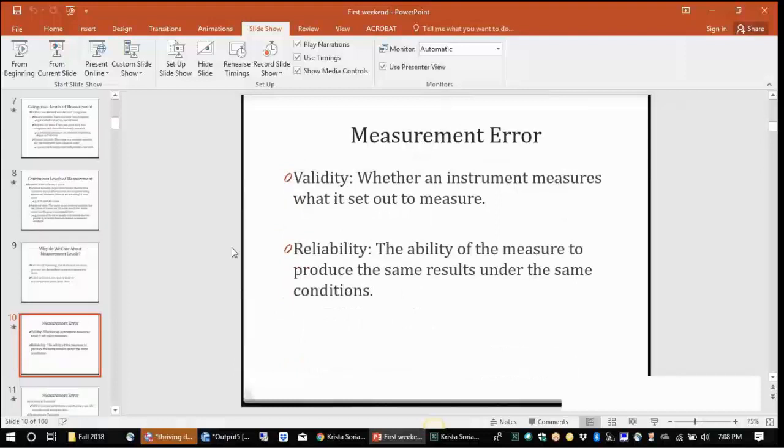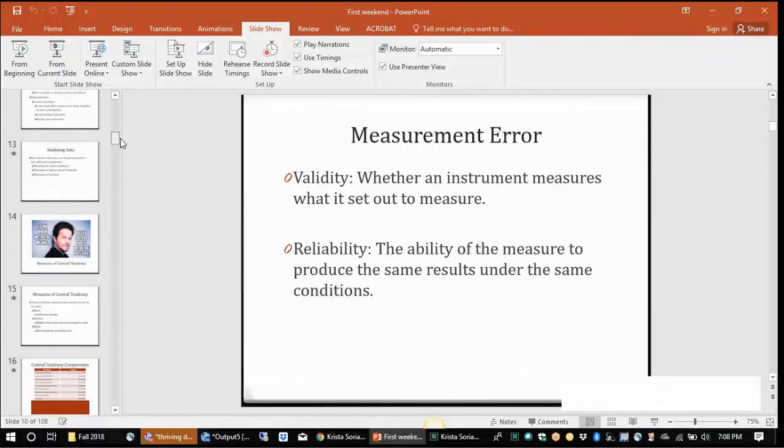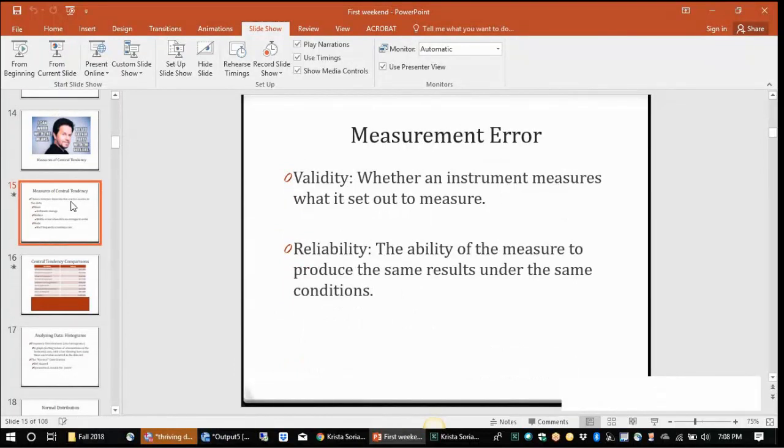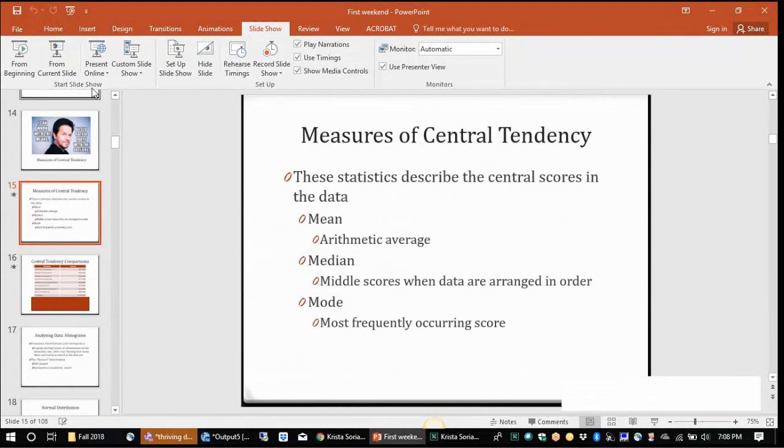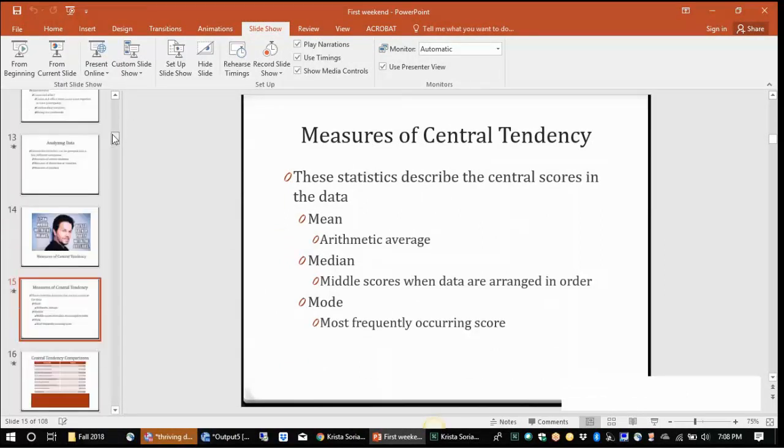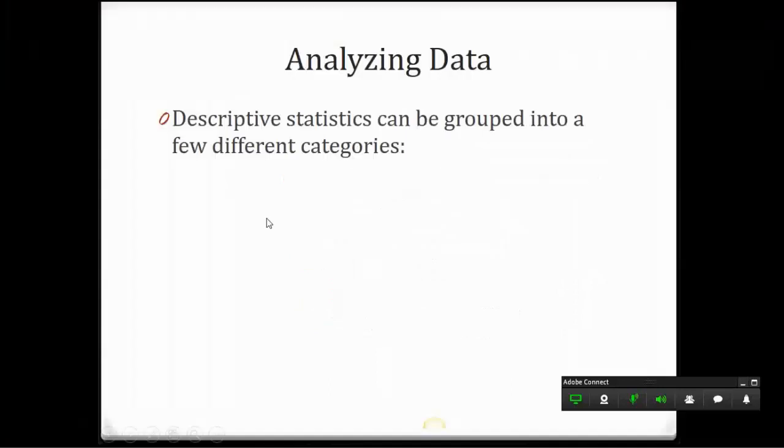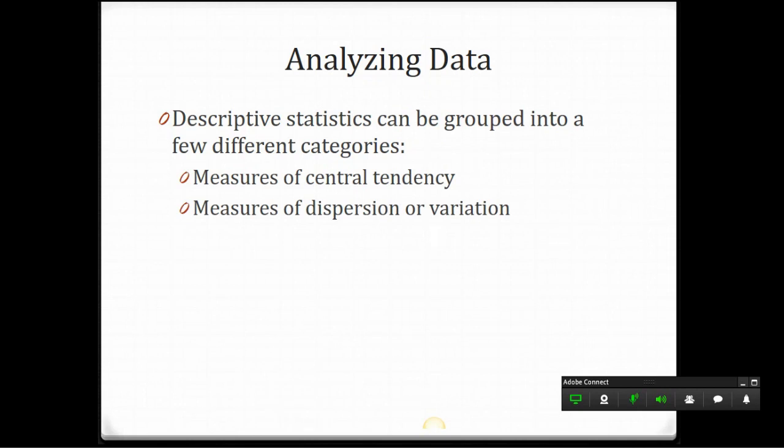I'm going to skip over measurement error, and we'll talk about that later this semester, but I want to jump to measures of central tendency. Before I do that, let me just quickly describe that descriptive statistics, which is the focus of the start of this class, can be grouped into a few different categories. One is measures of central tendency, the next is measures of dispersion or variation, and finally measures of position. In this video, we're going to be discussing measures of central tendency.